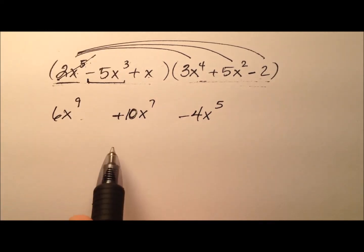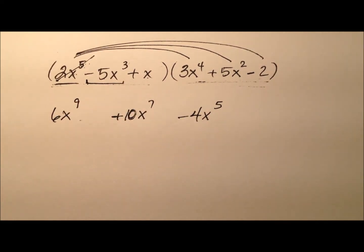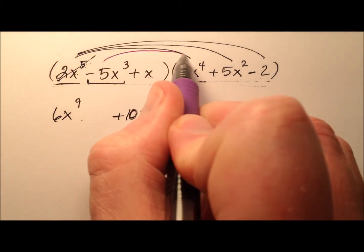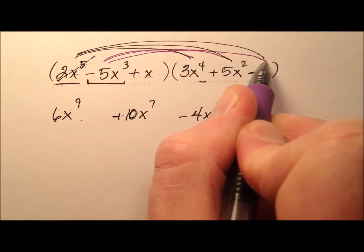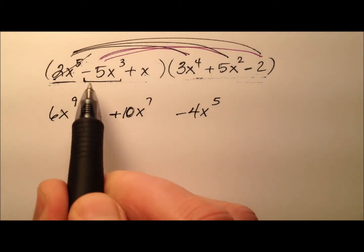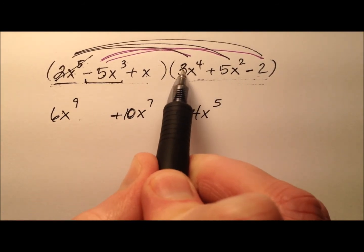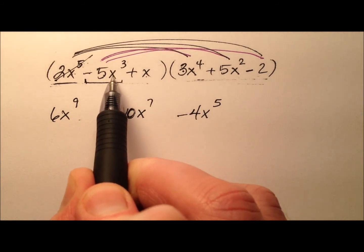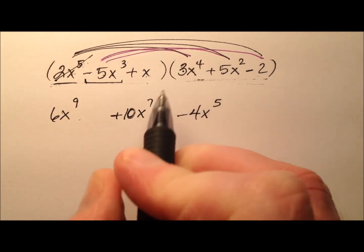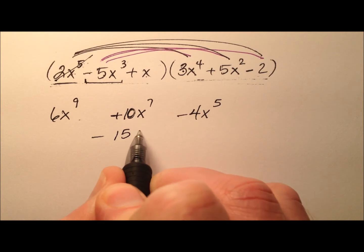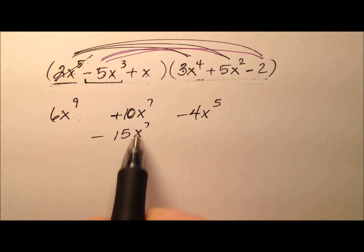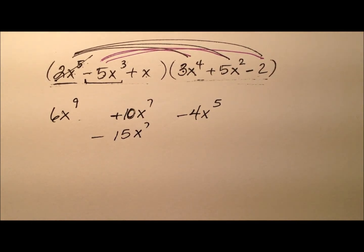So let's go ahead and take this negative 5x cubed, and I've got a different color here, and we'll distribute them here, here, and here. So negative 5x cubed times 3x to the fourth. Well, negative 5 times 3 is negative 15, and then x cubed and x to the fourth makes x to the seventh, so negative 15x to the seventh, and we'll line them up here in the x to the seventh column.